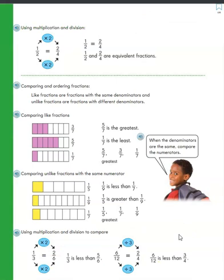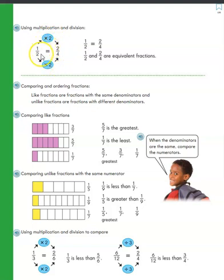We also learned a much easier way to find equivalent fractions using multiplication and division. If we multiply the numerator and the denominator by the same number, we will always find an equivalent fraction. So if we take one-half and multiply the numerator by two we get two, and multiply the denominator by two we get four — that tells us one-half is equal to two-fourths, so they're equivalent fractions.